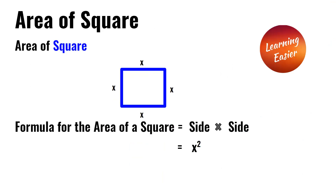Area of the square. The formula to find the area of the square is side times side, or x to the power of 2.